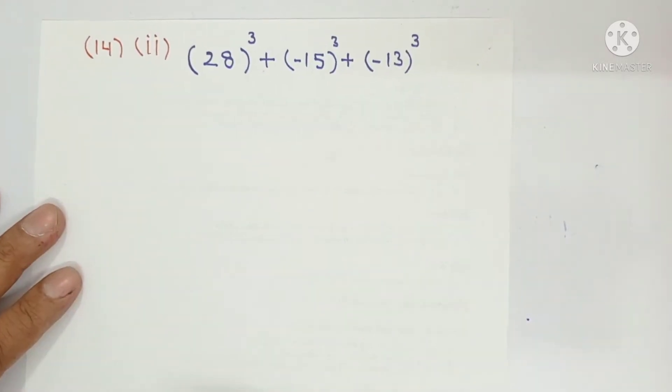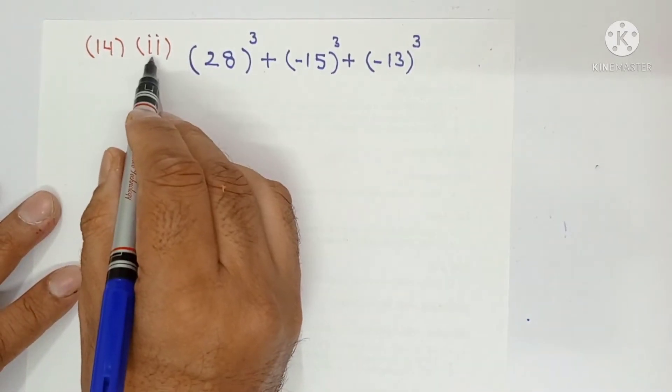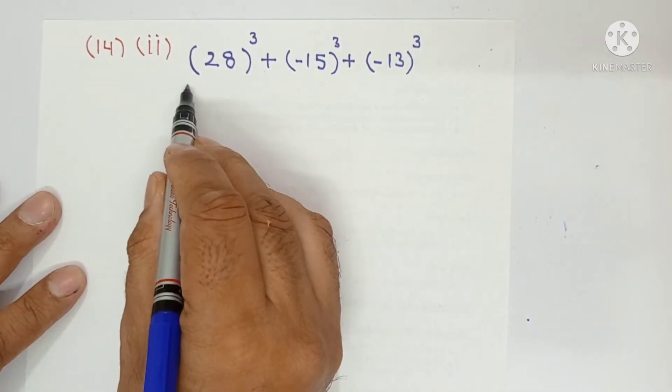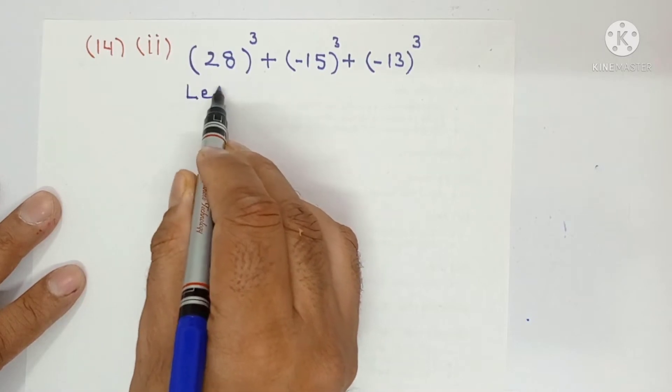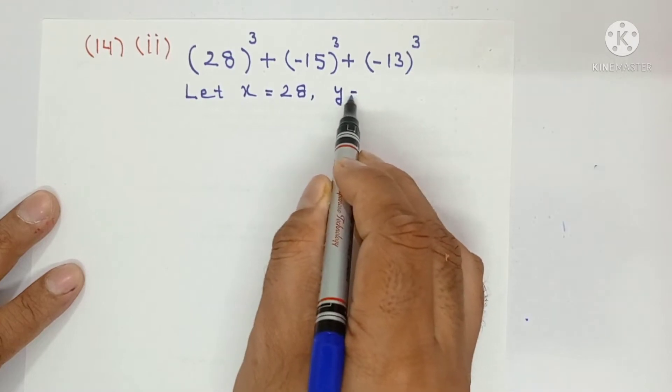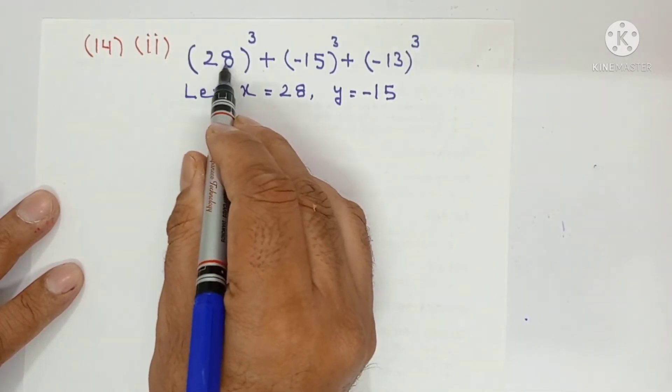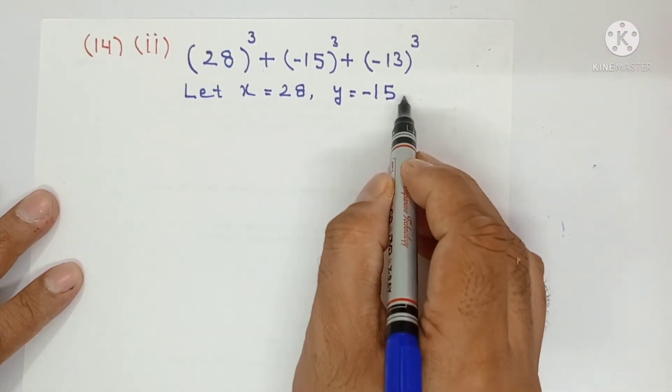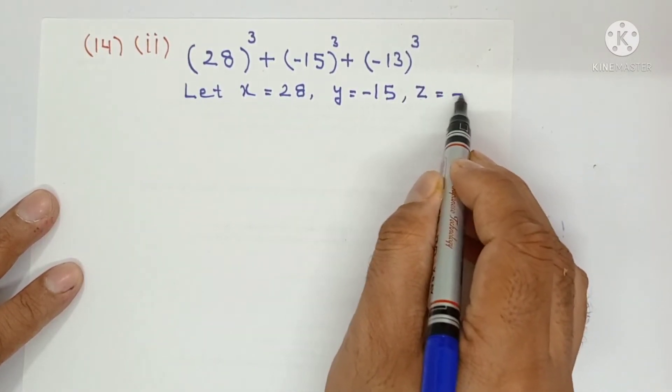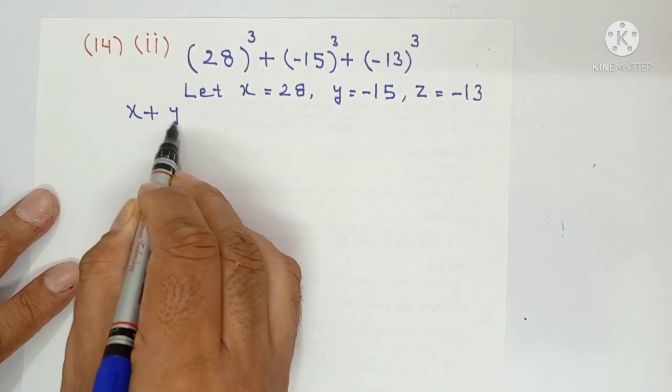The procedure will remain same as we did in question number part 1 of question 14. Let x is equal to 28, y is equal to minus 15. This base is 28, this base is minus 15, and z is equal to minus 13.